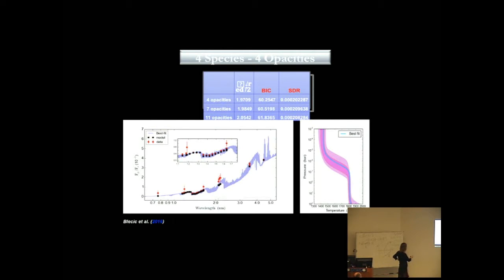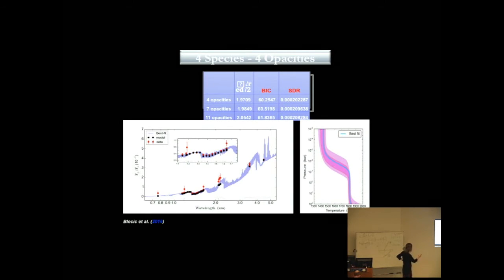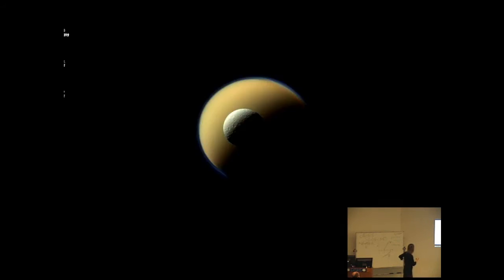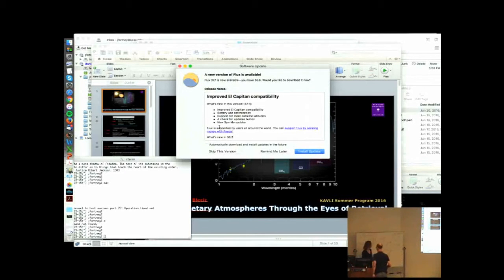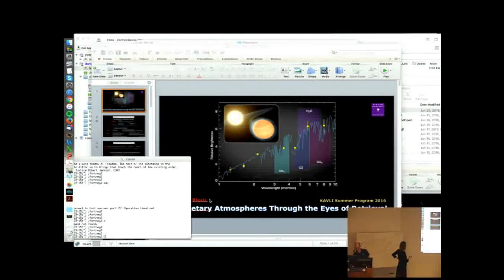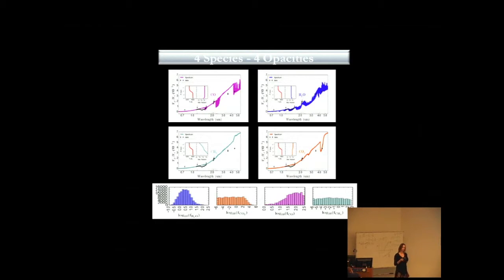What you can see here is the best fit model. In red are the data points. In black are the integrated points. And here you can see the HST part of the best fit model. This is the best TP profile. Here I compare when I put seven or 11 opacity sources, and they are just marginally different.